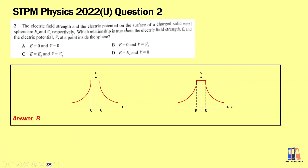In the 2022 Ulangan paper question: the electric field strength and electric potential on the surface of a charged solid metal sphere are E₀ and V respectively. What is true about E and V at a point inside the sphere? As discussed, there is no electric field inside the sphere, and V is constant because no work is done moving a charge from the surface to the interior. The answer is B.